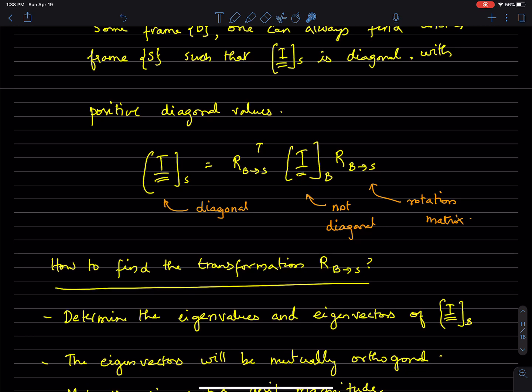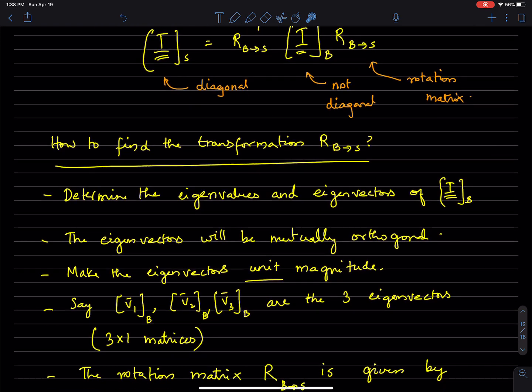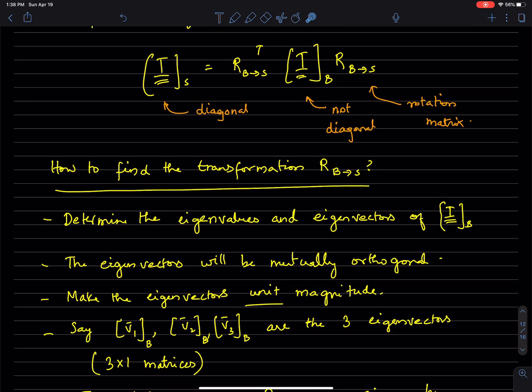We can find some rotation matrix R such that R-transpose times I times R equals some diagonal matrix. How do we find this transformation rotation R from frame B to frame S?